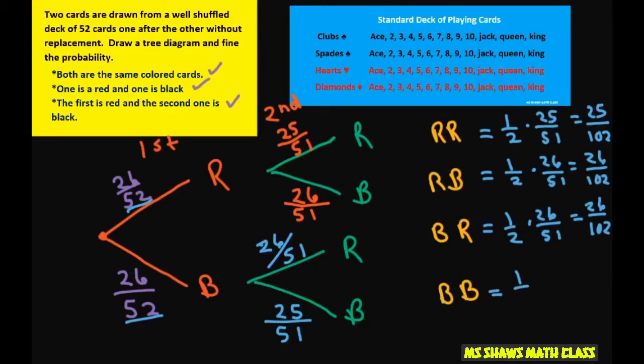or the black black is one half times 25 divided by 102. Not 102, but 51, which gives you 25 divided by 102. Let me scoot that over. So 102. All right. It's the same as this one. So let's answer the questions.